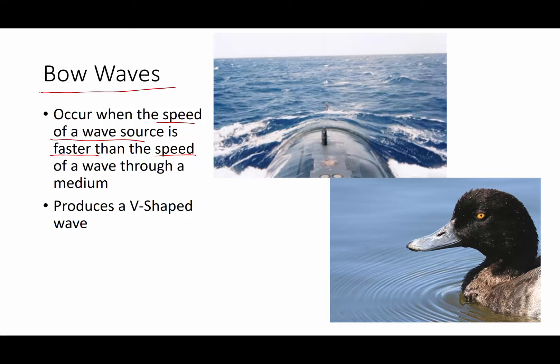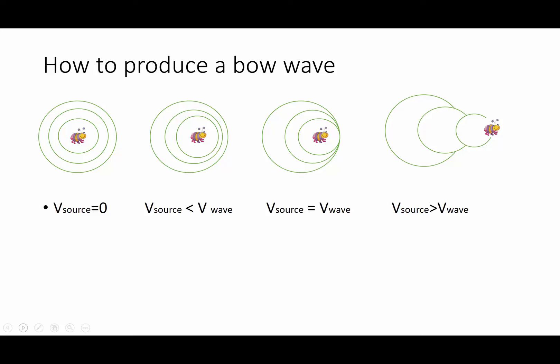And when this occurs, a V-shaped wave is produced within that medium. You've seen this if you have ever gone in a rowboat or a powerboat, or it's even produced by a little duck swimming through a pond. You get a V-shaped wave that is produced by this motion. So let's talk about how a bow wave gets produced.